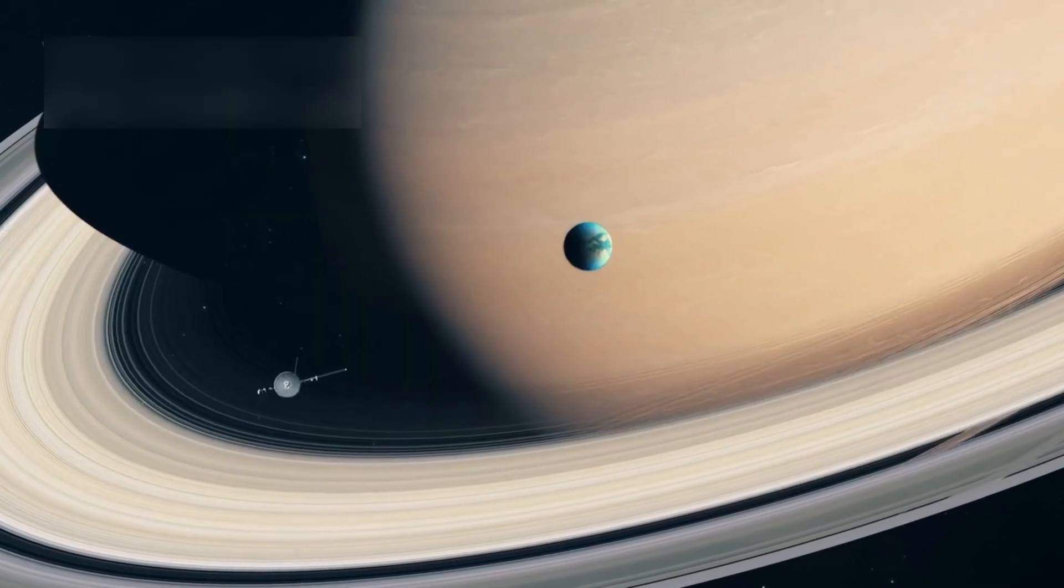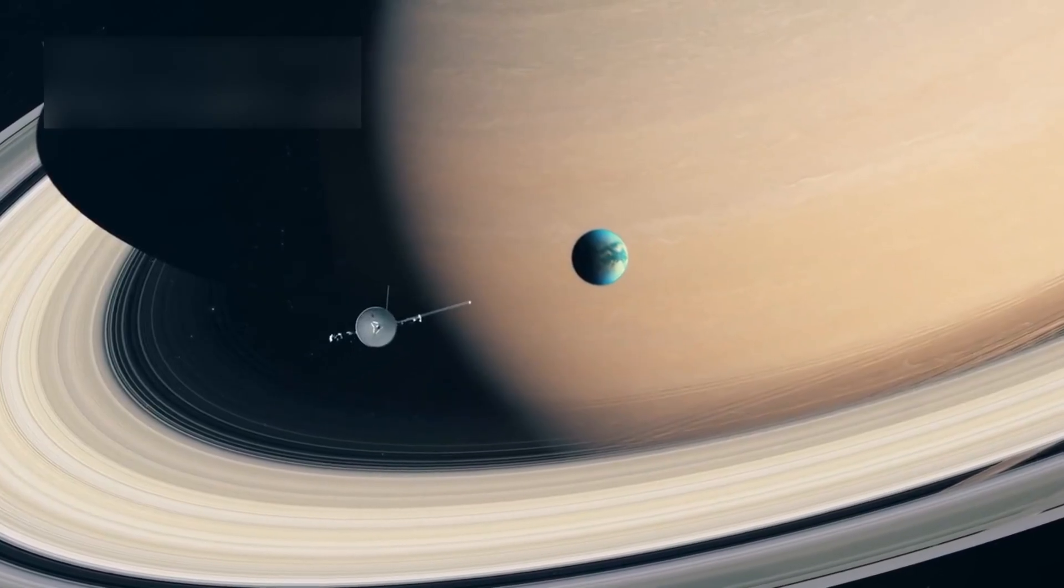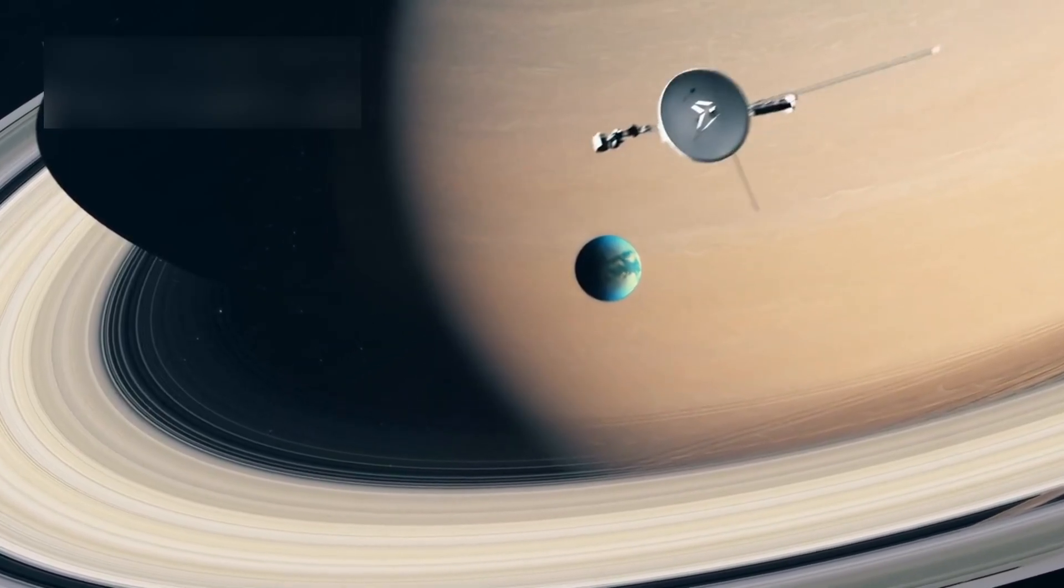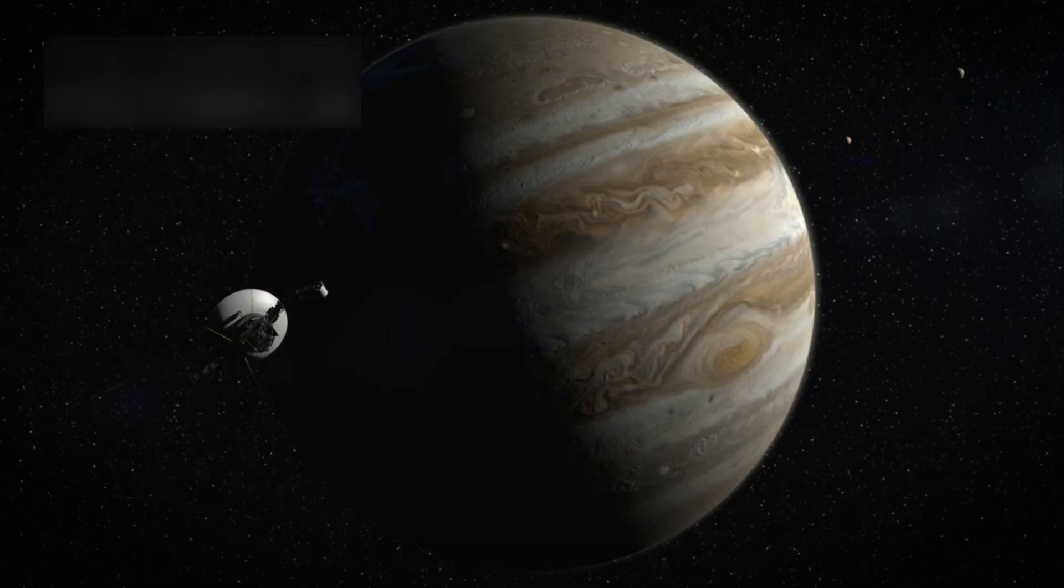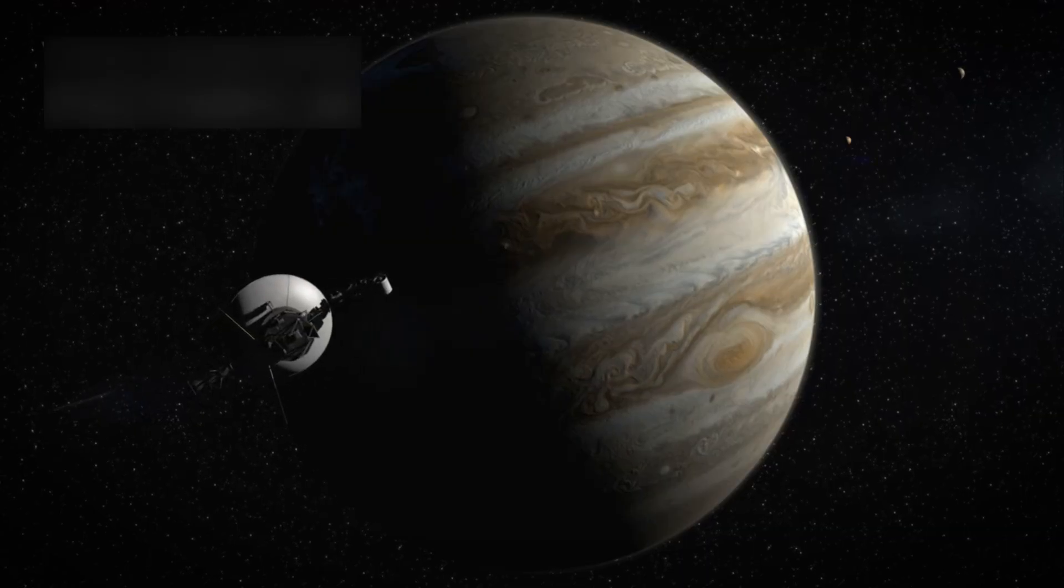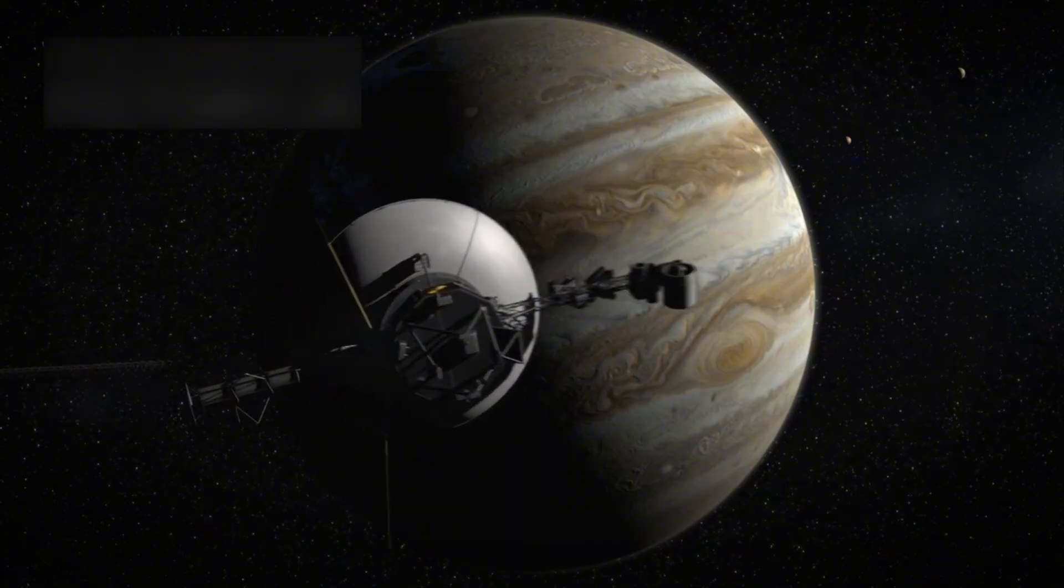The spacecraft, along with its twin Voyager 2, was designed to explore Jupiter and Saturn, two of the gas giants that dominate our solar system. The mission was meant to last just five years, but what happened next amazed even the most optimistic scientists.